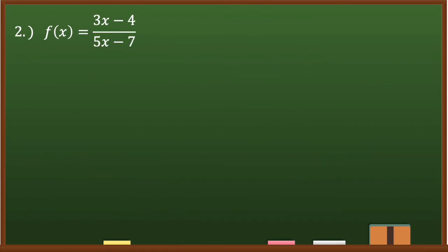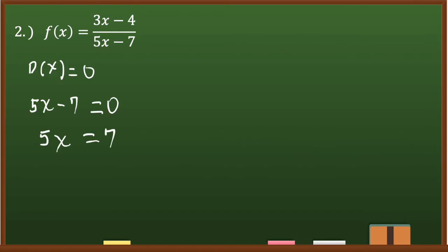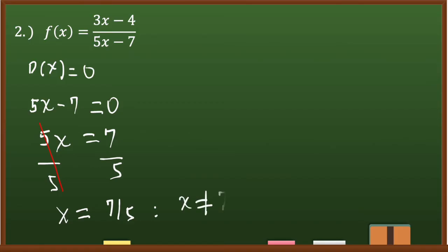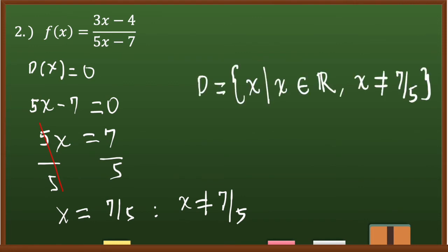Number two: f(x) = (3x - 4) / (5x - 7). Setting the denominator to zero: 5x - 7 = 0, so 5x = 7, and dividing both sides by 5 gives x = 7/5. Therefore x must not equal 7/5, and the domain is the set of all x such that x is an element of real numbers where x ≠ 7/5.